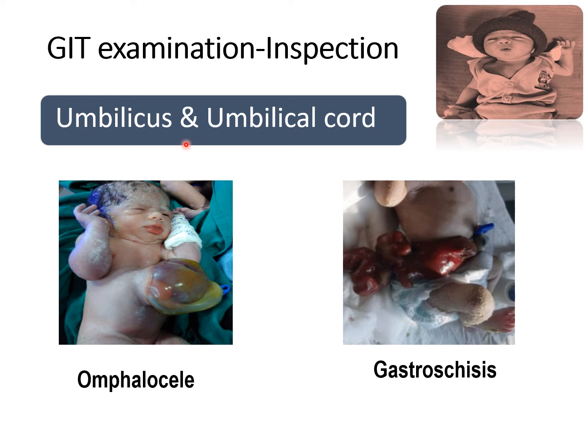Sometimes the newborn has a congenital anterior abdominal wall defect. In this image you can see the newborn has omphalocele at the level of the umbilicus — bowel loops, liver, and sometimes spleen are also herniated, and it is covered with a sac and associated with other congenital malformations. In gastroschisis, it is present in the right-sided paraumbilical area, not covered with a sac, the umbilical cord is intact, and it is rarely associated with other congenital malformations.